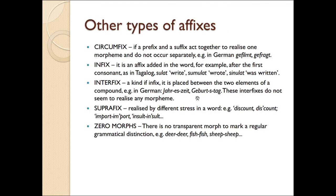There are some types of affixes. A circumfix is when a prefix and suffix act together to realize one morpheme and do not occur separately — as seen in German. An infix is added inside a root or a base. An interfix is a kind of infix placed between the two elements of a compound, seen in German examples but not in English. A suprafix is realized by different stress in a word — for example, 'discount' (noun) vs. 'discount' (verb), or 'import' vs. 'import.' Zero marking is when there is no transparent mark to indicate a regular grammatical distinction — for example, deer/deer, fish/fish, sheep/sheep in the plural. There is a zero mark; we do not see it, but the plural is meant.